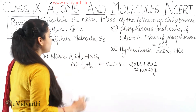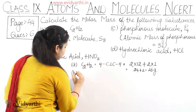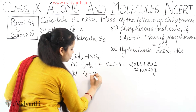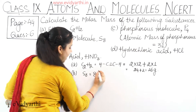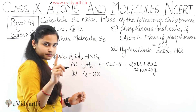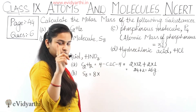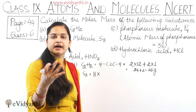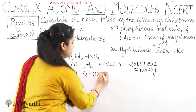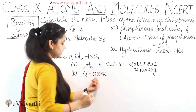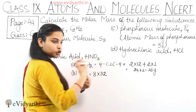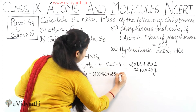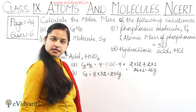Part B — sulfur molecule, S8. We have 8 sulfur atoms, and the atomic mass of 1 sulfur atom is 32. So the molar mass = 8 × 32 = 256 grams. That is the molar mass of the sulfur molecule.